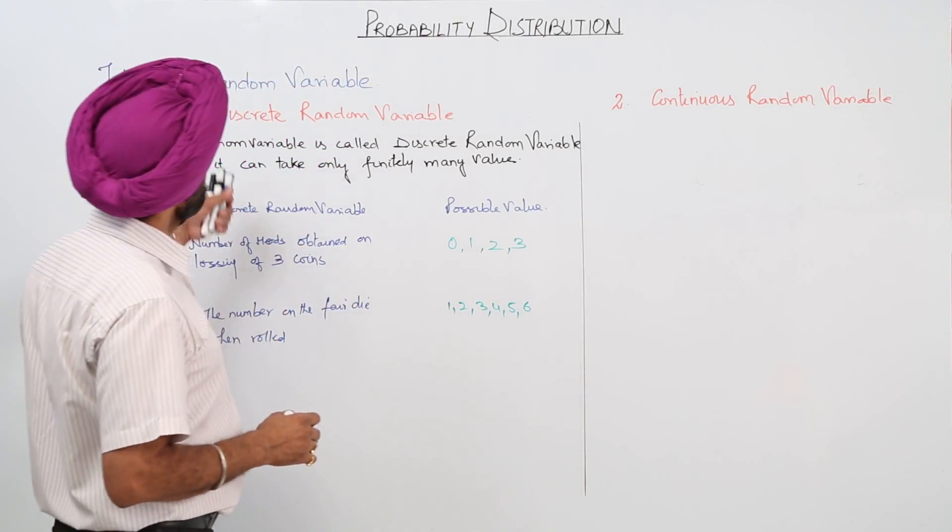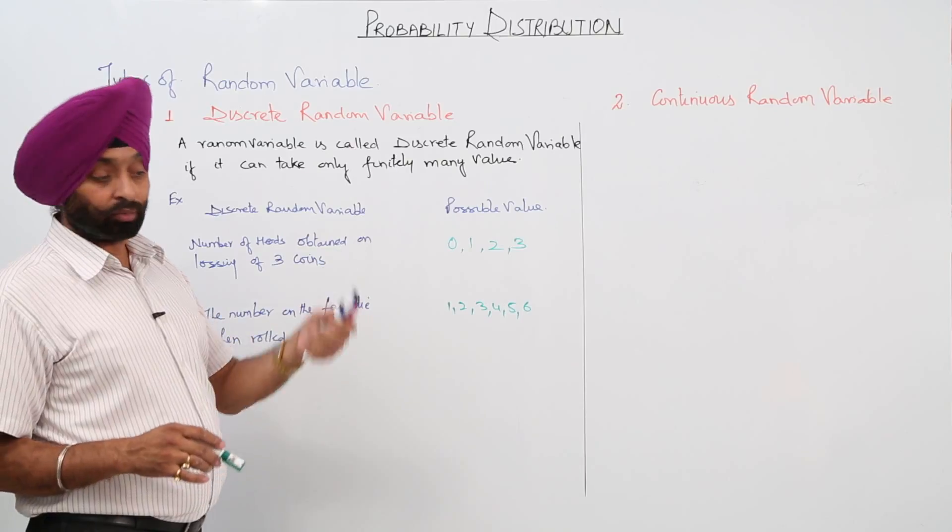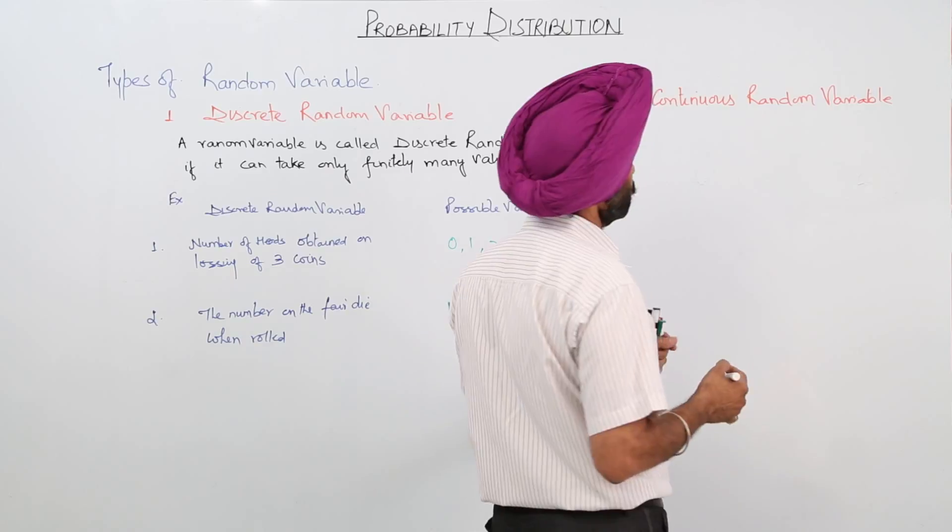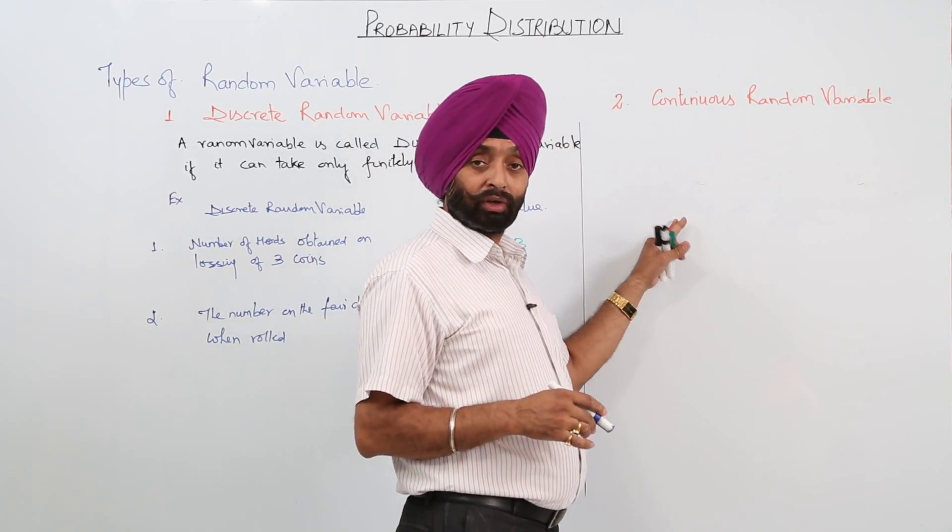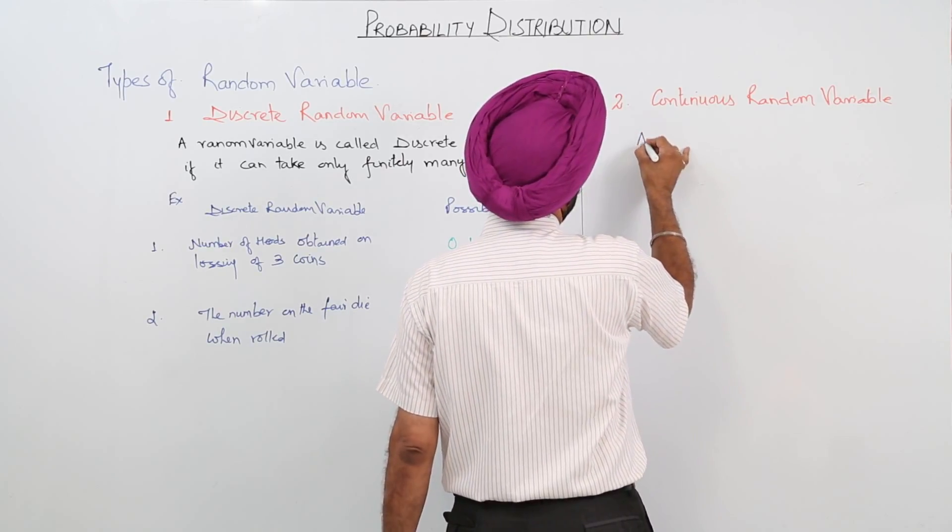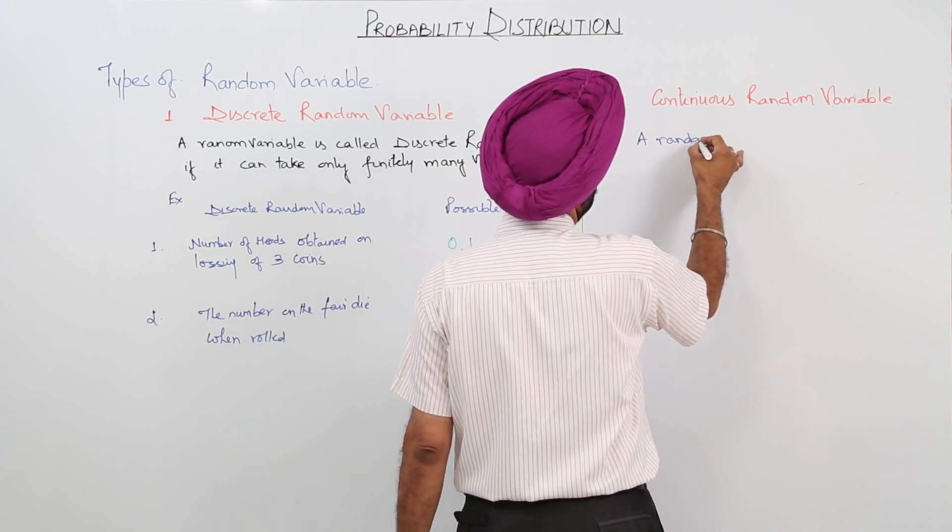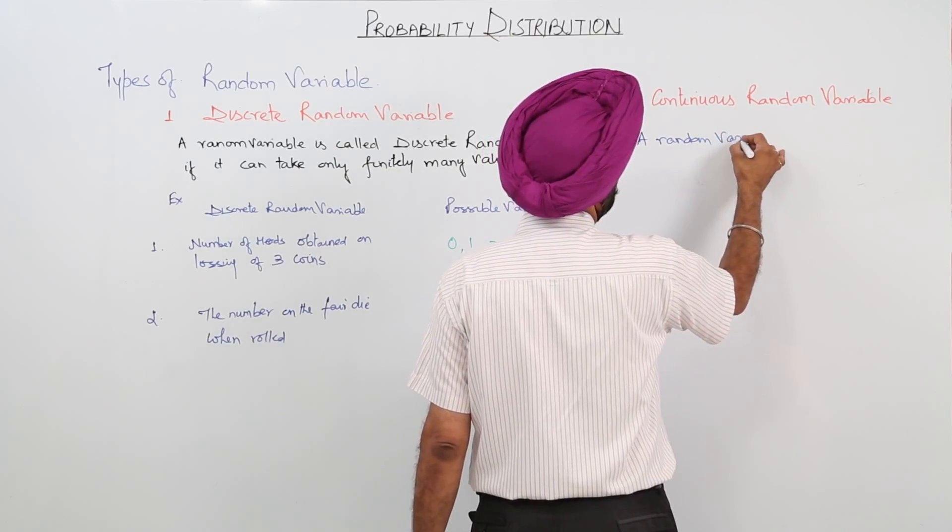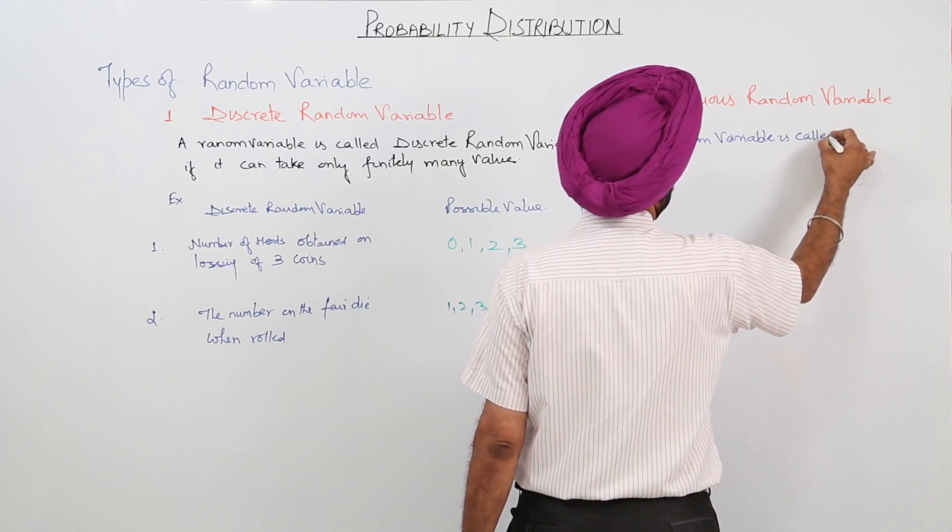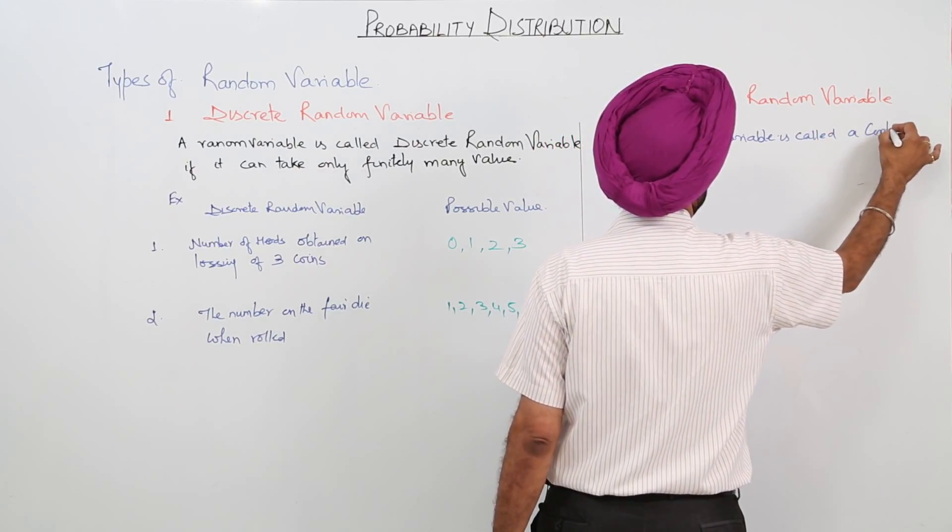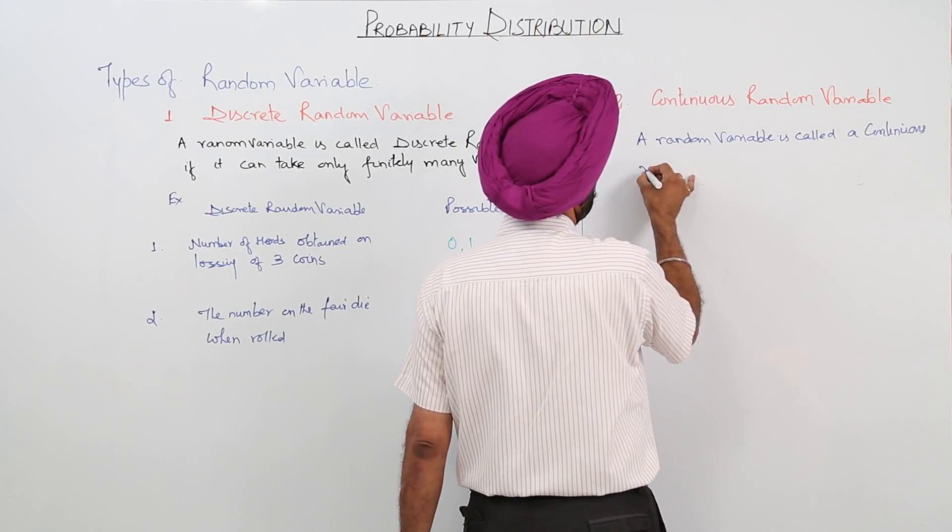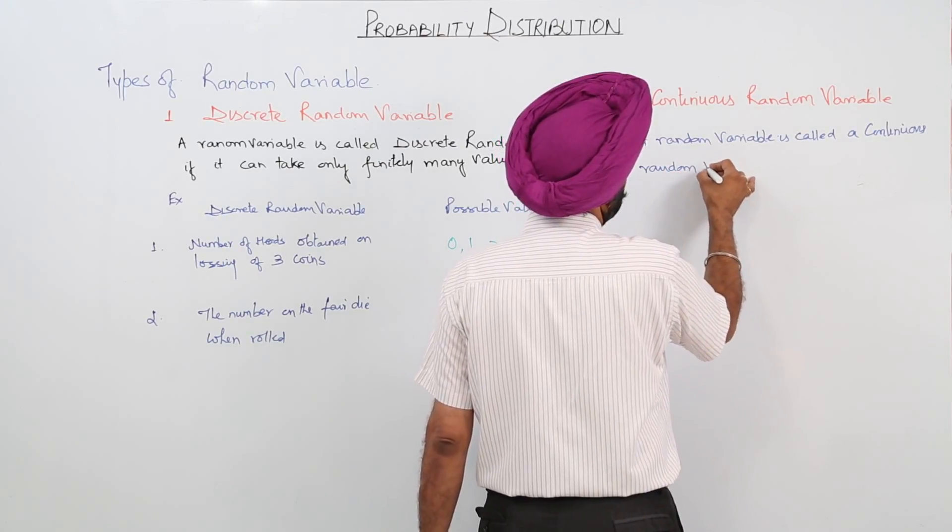So this is what about a discrete random variable. Now second one is that is continuous random variable. We are not going to use this one, but still I am going to give you a definition for it. Now a random variable is called a continuous random variable.